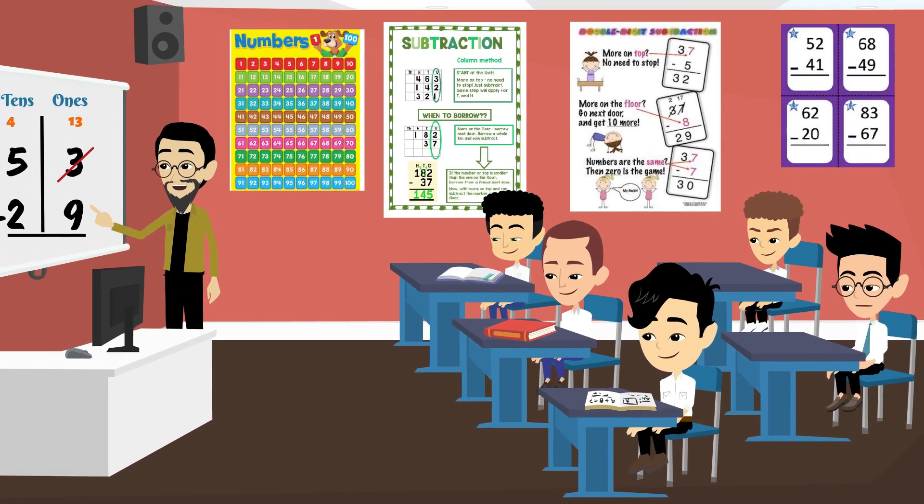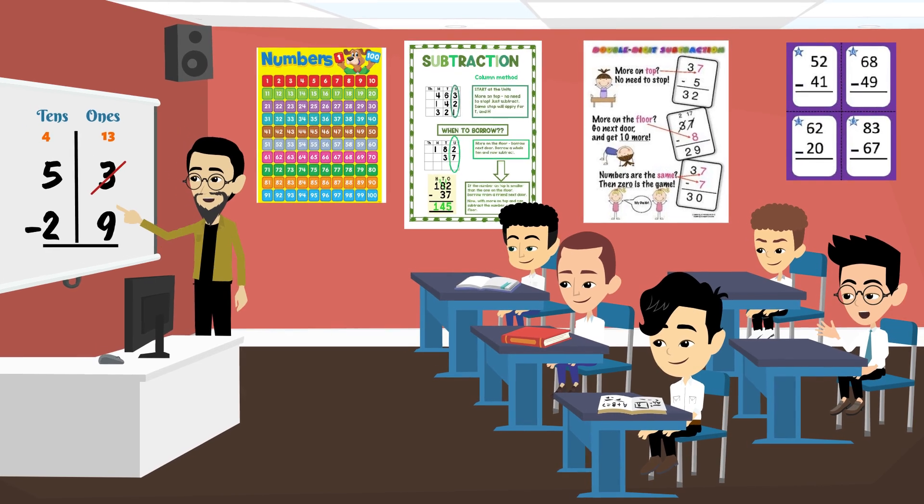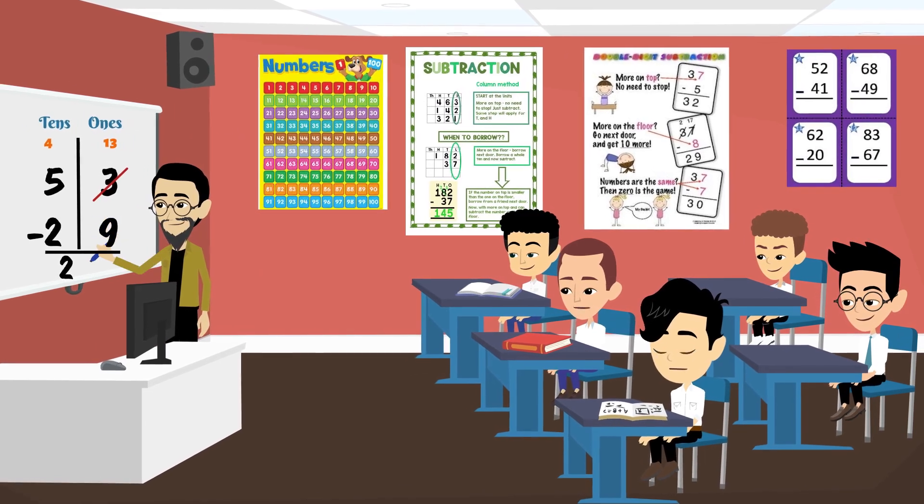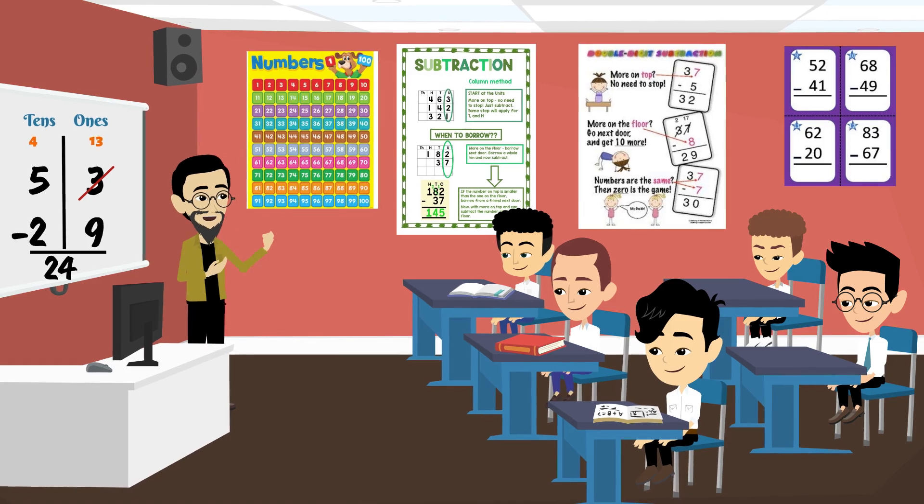So, 53 minus 29 equals? 24. Well done, everyone.